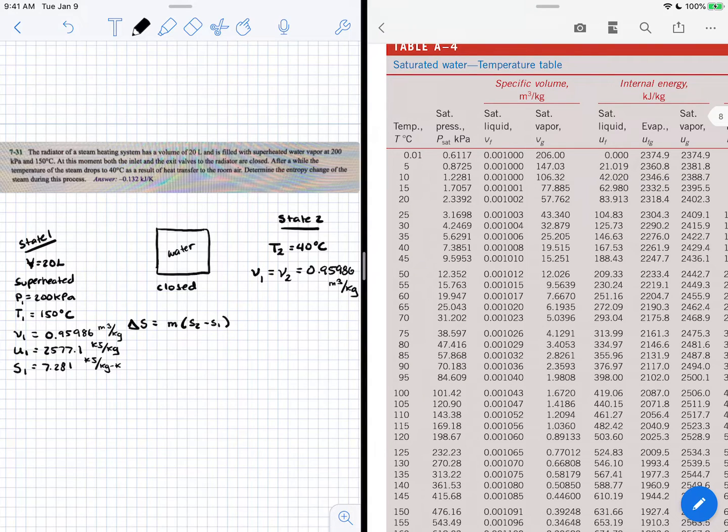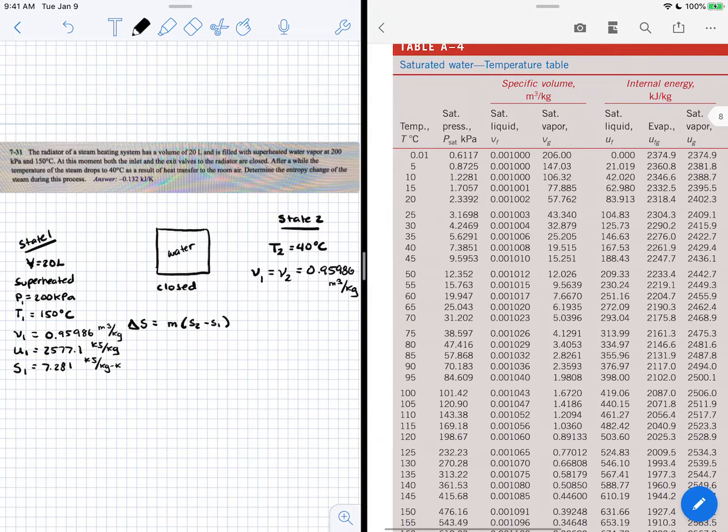Since we're a mixture, we know we're saturated, but an important property we need to determine is the quality of the mixture. I'll write down the values for saturated liquid and saturated vapor specific volumes at 40 degrees Celsius.